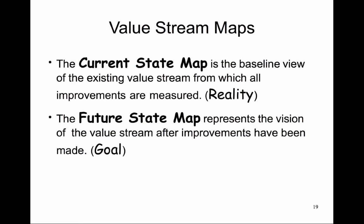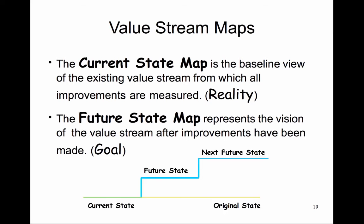There are two types of value stream maps: current and future. The current state map is the baseline view of the existing value stream from which all other improvements will be measured — the reality, or the as-is state of the process. The future state map represents the vision of the value stream after improvements have been made — in other words, the goal — showing how the value stream can be optimized to eliminate the greatest amount of waste, promoting the highest possible value to the customer.